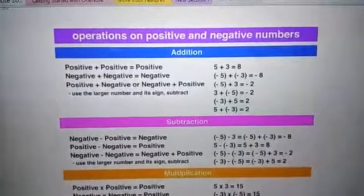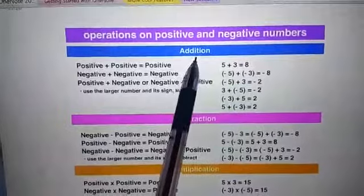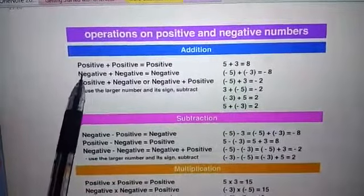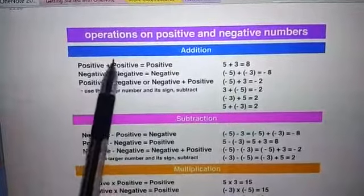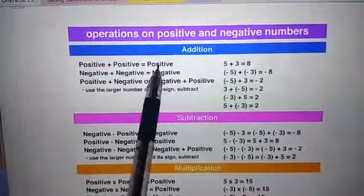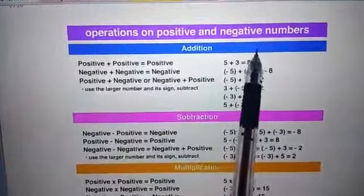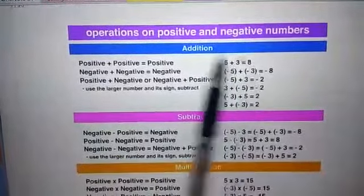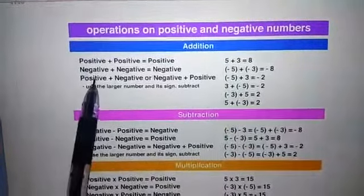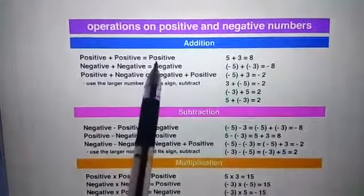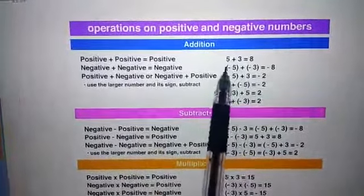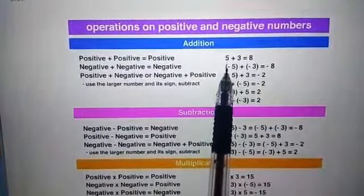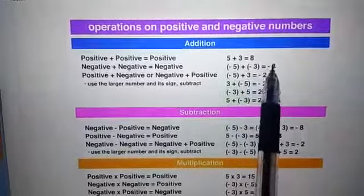The very first operation is addition. If we add a positive integer to a positive integer, the result will always be positive. So if we add 5 and 3, the result will be 8. If we add a negative integer to a negative integer, the result will always be negative. For example, if we add minus 5 and minus 3, the result will be minus 8.